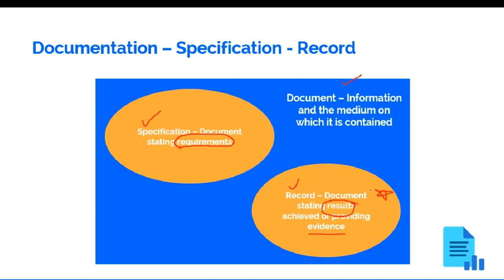A set of documents — for example, specifications and records together — is often known as documentation. It is important to make the differentiation between documents and records. In dictionaries, a record is a type of document, but when it comes to the information security world, these are two distinct concepts. A record is the output of a process or a control.